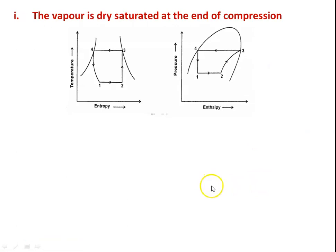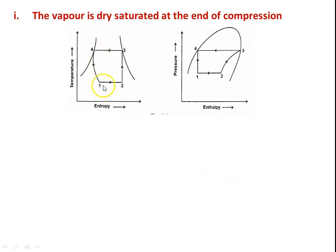Case 1: Vapor is dry saturated at the end of compression. State 4 is saturated liquid and state 3 is saturated vapor, so properties are read directly from the table. H1 = H4 = 59.7 kJ/kg, H3 = Hg3 = 197.9 kJ/kg. To find dryness fraction at state 2, use S2 = S3: Sf2 + x2(Sfg2) = Sg3. Substituting: 0.0906 + x2(0.7052 − 0.0906) = 0.6869, giving x2 = 0.97.